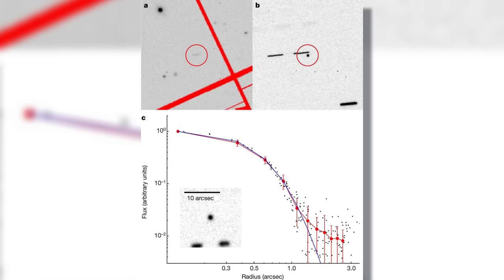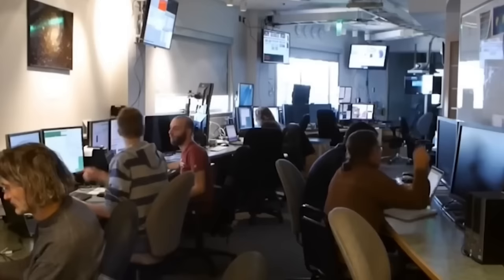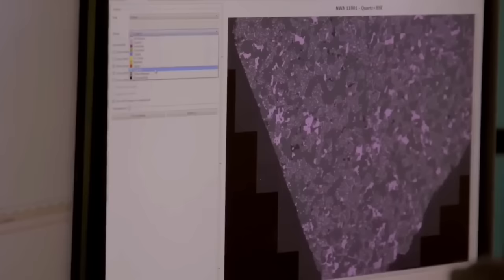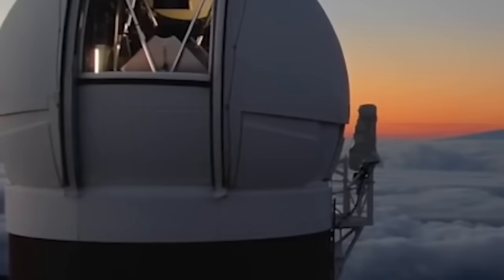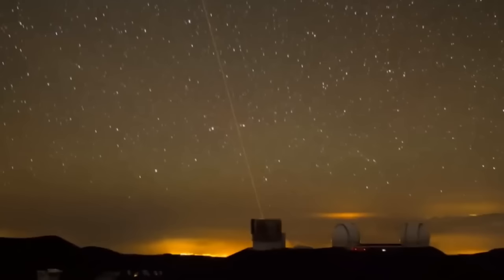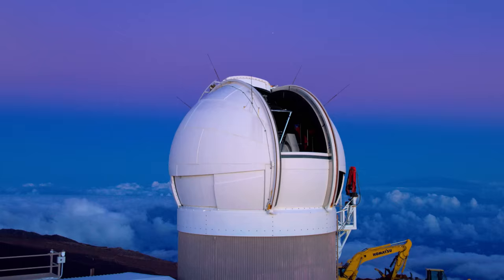This unexpected discovery immediately captivated the astronomical community and sparked excitement and curiosity. The Pan-STARRS-1 telescope, a jewel of the University of Hawaii, proudly stands atop Haleakala's Peak on the picturesque island of Maui. It boasts a 1.8-meter diameter.